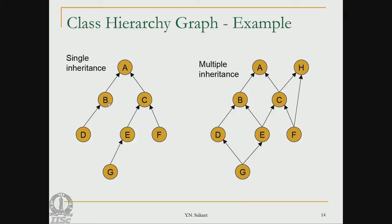This traversal is straightforward for single inheritance but very cumbersome and slow for multiple inheritance, because all paths must be checked. Execution time increases with depth of the class hierarchy — nodes at a lower level require more hops. For nodes at the top level, one hop suffices; deeper nodes require 2 or 3 hops.